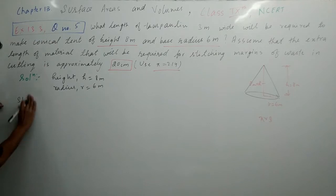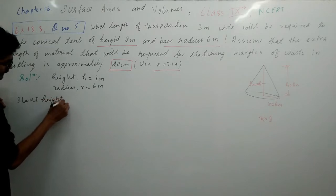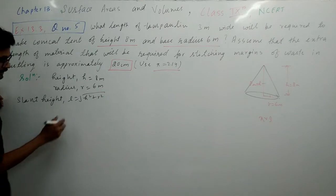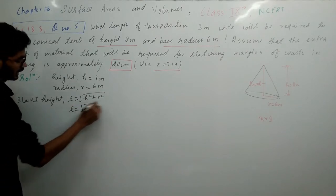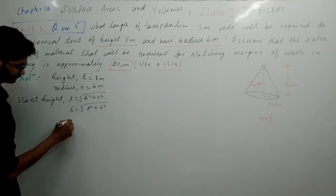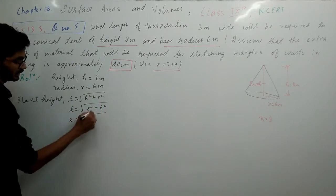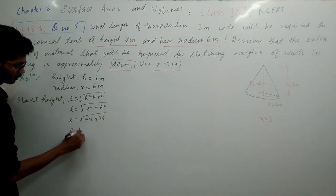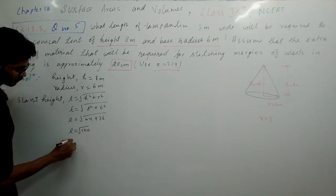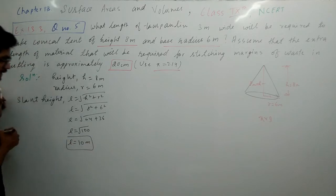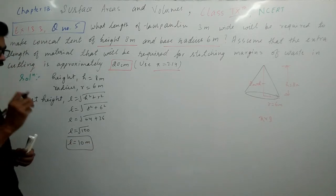Slant height formula is under root h square plus r square. h value is 8, r value is 6. So 8 square is 64 plus 6 square is 36. This becomes 100. 100 is the square of 10. So the slant height is 10 meter.